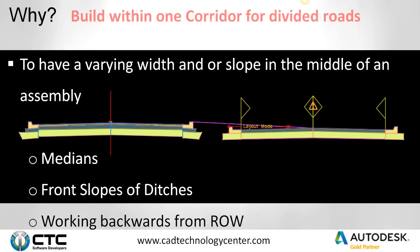The fourth reason is basically to build everything within one corridor. I have seen clients build a corridor just for southbound and then another corridor just for northbound, and then do a show boundary between the two to fill in the blanks where the two corridors don't match. Using a mark point and the link to mark point, I'm able to build both of these at the exact same time in the same corridor using one region, one assembly.